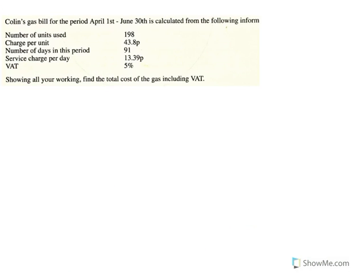This one is slightly different. This time you're told the number of units that have actually been used. And the service charge is slightly different — this one tells you how many days and what the cost is per day. Have a go at this one and then my answer will appear.